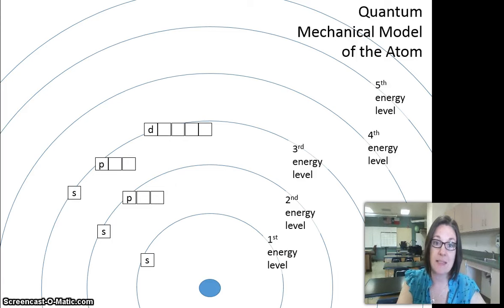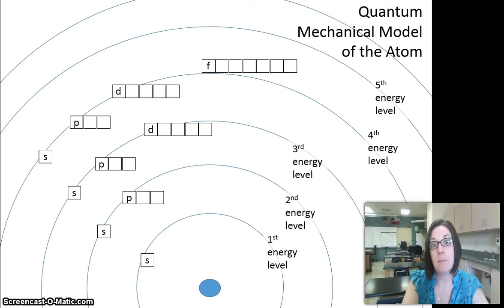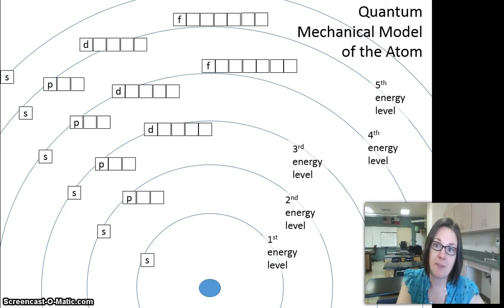The third energy level is even larger, so it's got an S and a P and a D sublevel. And once you get to the fourth energy level and above, they have the S, P, and D sublevels, but also an F sublevel.